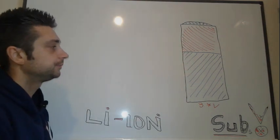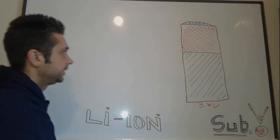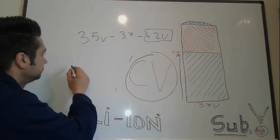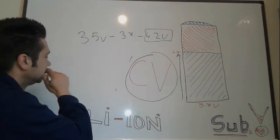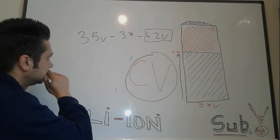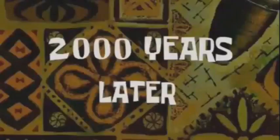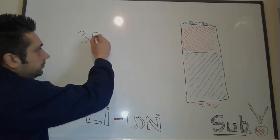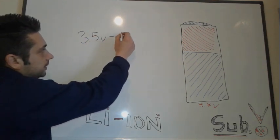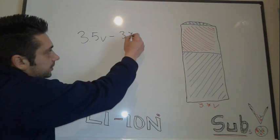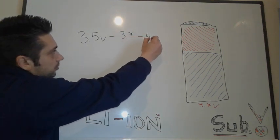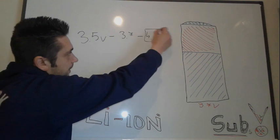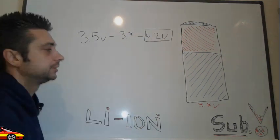First thing first, when you're gonna have a lithium-ion cell, you have to have in mind some specifications. The voltage is 3.5V when it's flat, 3.7V nominal, and 4.2V fully charged. These are the steps of the charging battery.